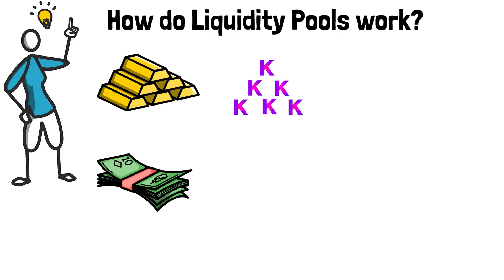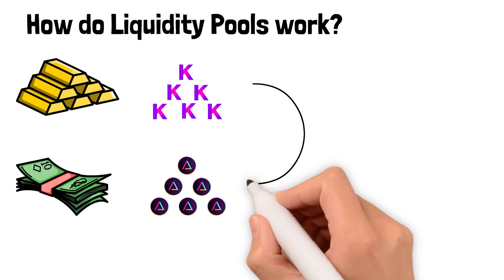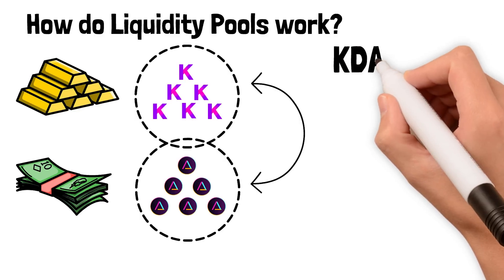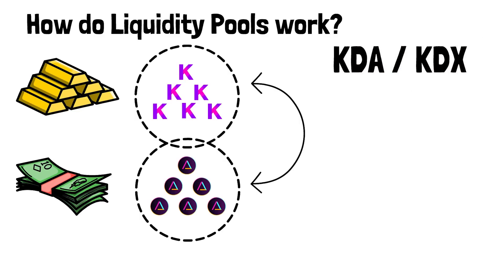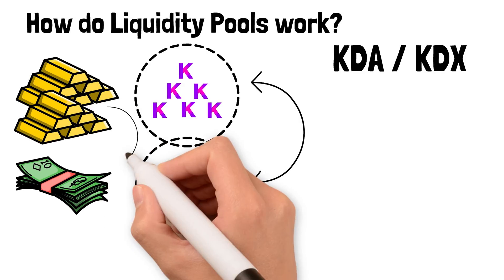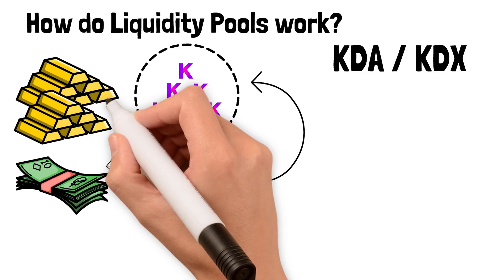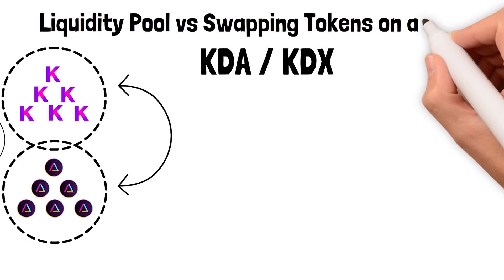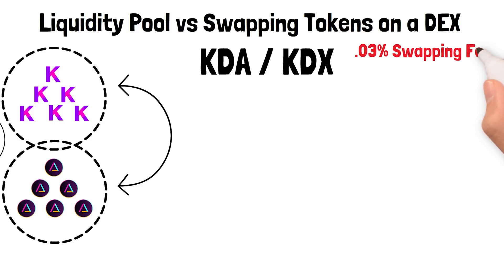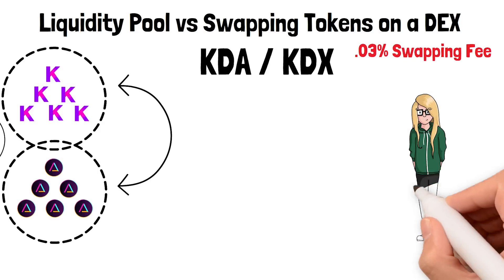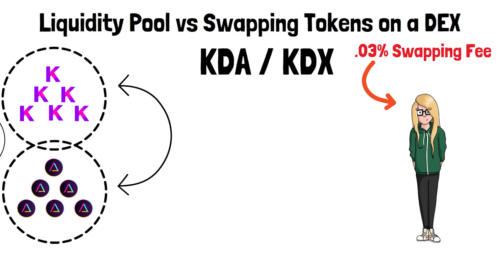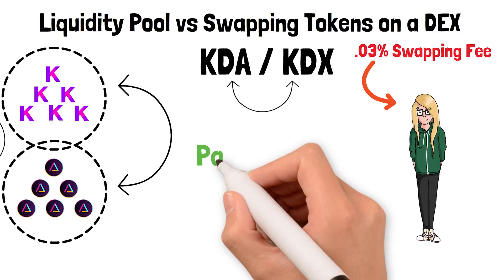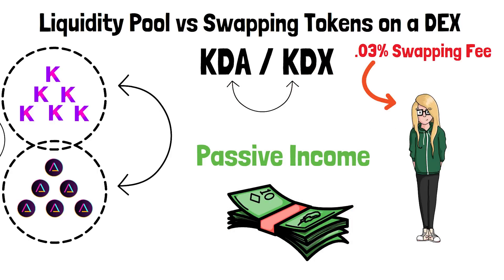Remember the story about banks owning gold and cash? Liquidity pools in crypto work the same way. If you wanted to swap KDA for KDX, there needs to be a big pool of KDA and a big pool of KDX. These liquidity pools allow anyone to come along at any time and swap one token for another. What's cool about decentralized exchanges is that they charge the swapper a 0.03% swapping fee, which is then paid to the liquidity providers to incentivize people to bring crypto assets to the DEX, stake them, and earn passive income.